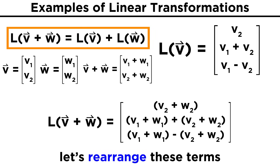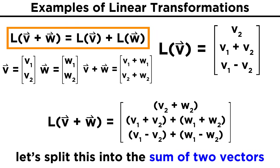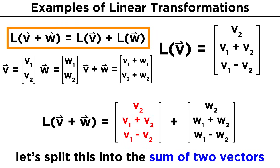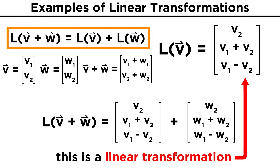Using the associative property of addition, we can rearrange this and then split it into the sum of two vectors: (V2, V1+V2, V1−V2) plus (W2, W1+W2, W1−W2). Each of these is simply the transformation of vectors V and W, meaning we can write them as L(V) + L(W). We have now satisfied the second requirement and demonstrated that this is in fact a linear transformation.